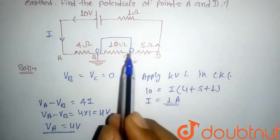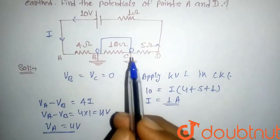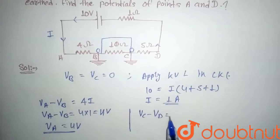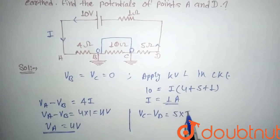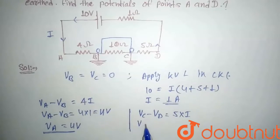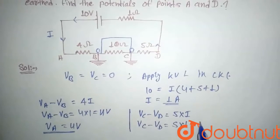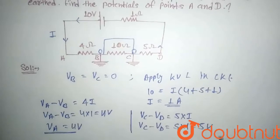Again, we will apply here Ohm's law. So voltage across the 5 ohm will be VC minus VD equal to 5 into I. So here also will be VC minus VD equal to 5 into 1 equal to 5 volt.